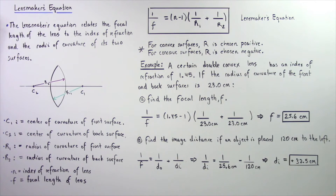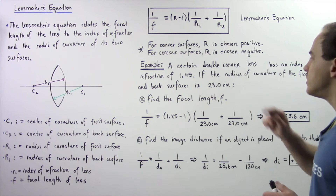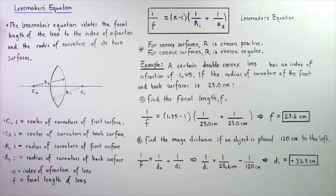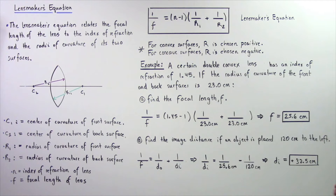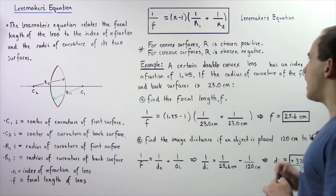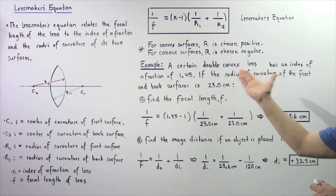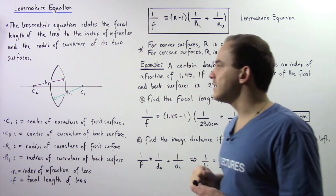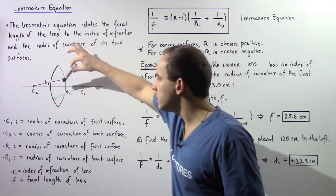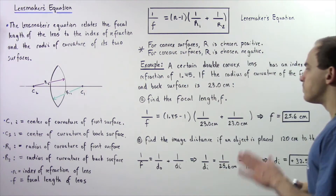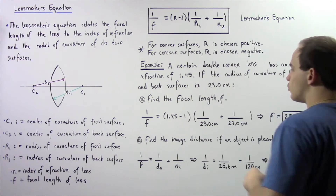A certain double convex lens has an index of refraction of 1.45. The radius of curvature of the front and back surfaces is 23 centimeters. In part A, find the focal length F. In part B, find the image distance if an object is placed 120 centimeters to the left of the lens. For a double convex lens, R1 is equal to R2, so let's begin by applying the lens maker equation.